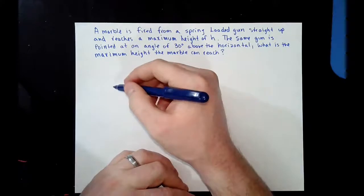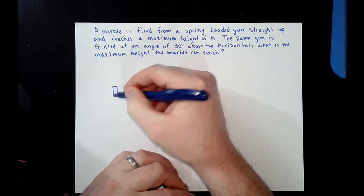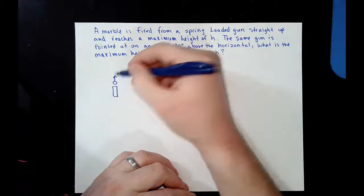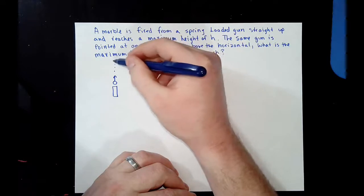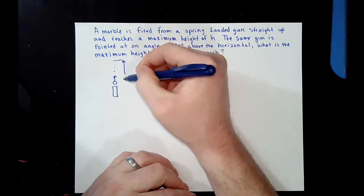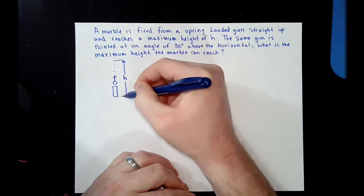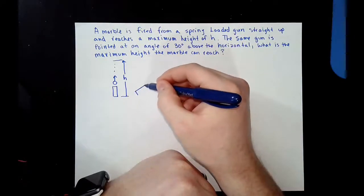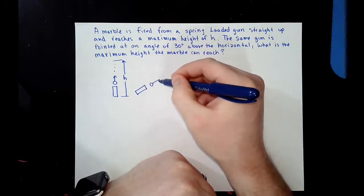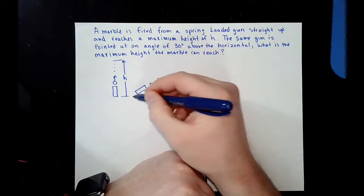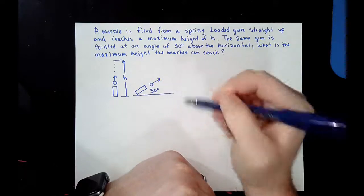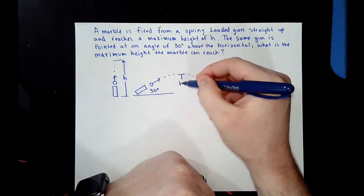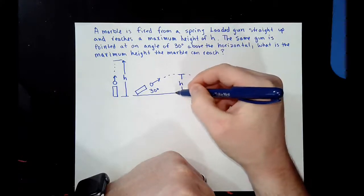So pretty much this problem states this: You have some sort of projectile launcher and it's able to fire a marble to a height of H. And the same projectile launcher is then used to fire a marble at an angle of 30 degrees above the horizontal. So the question is, what is this new maximum height can it achieve or will it achieve?